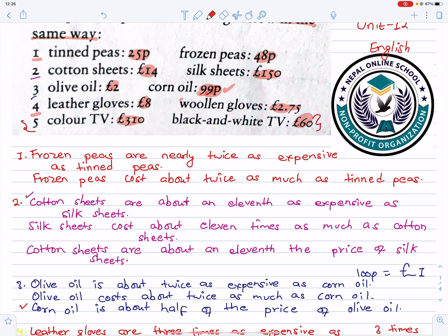The color TV is nearly five times as expensive as the black and white TV. Color TV costs about three times as much as the black and white TV. And the last one: black and white TV is about one-fifth the price of color TV.